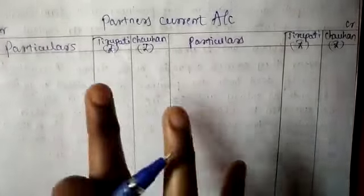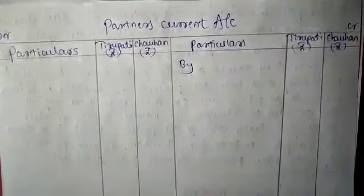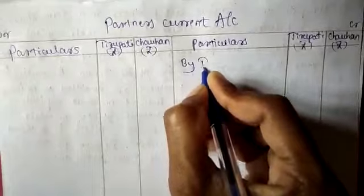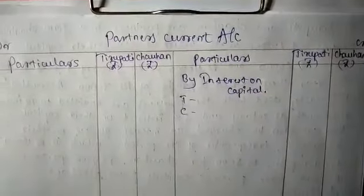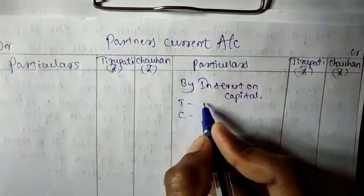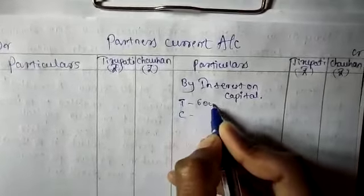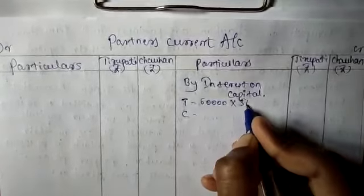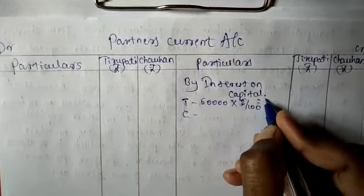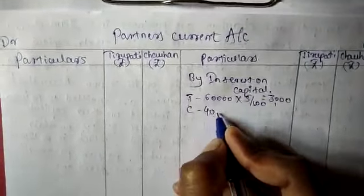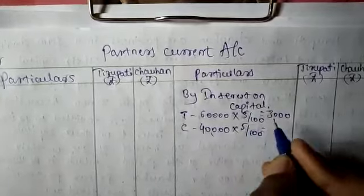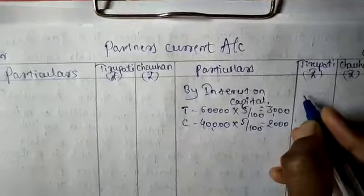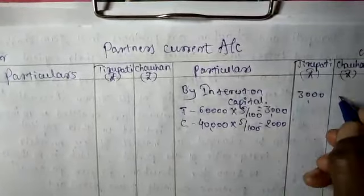Those adjustments are entered in the partner's current account. The first adjustment is interest on capital. Tirupati's capital is ₹60,000 at 5% for the full year, which gives ₹3,000. Chauhan's capital is ₹40,000 at 5%, which gives ₹2,000. So Tirupati's interest on capital is ₹3,000 and Chauhan's is ₹2,000.